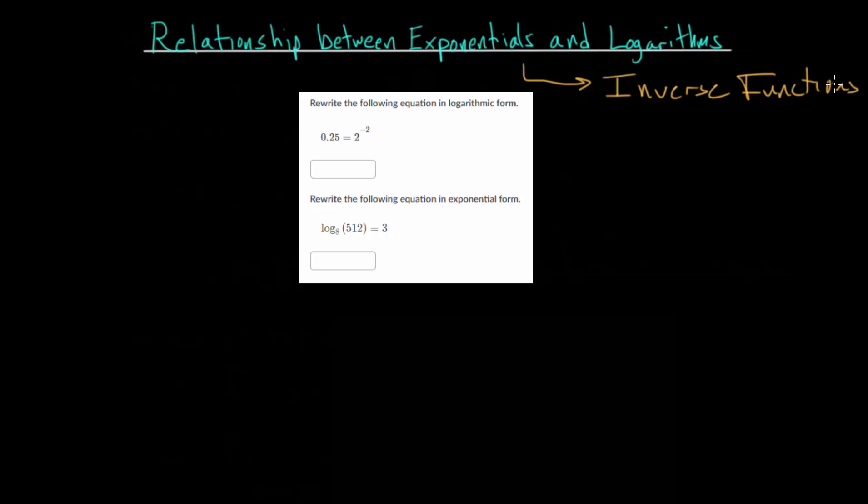Remember that inverse functions essentially reverse each other. So if we had some function where the input or the domain had values of 2 and 4, and the output to this function would be values of 5 and 10, then the function takes the input and tells you the output.